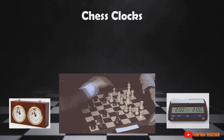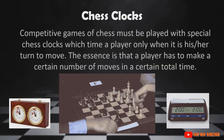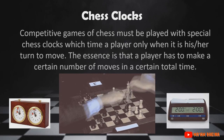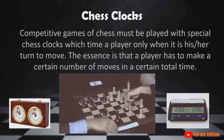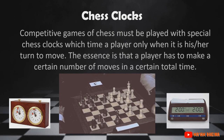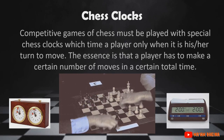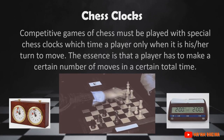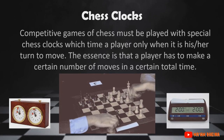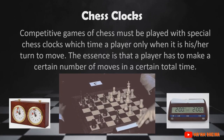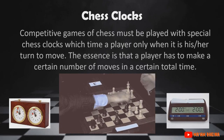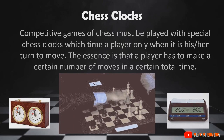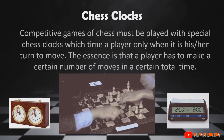Chess clocks: competitive games of chess must be played with special chess clocks which time a player only when it is his or her turn to move. The essence is that a player has to make a certain number of moves in a certain total time. After moving, the player presses a button on the clock, which stops the player's clock and starts the opponent's clock.